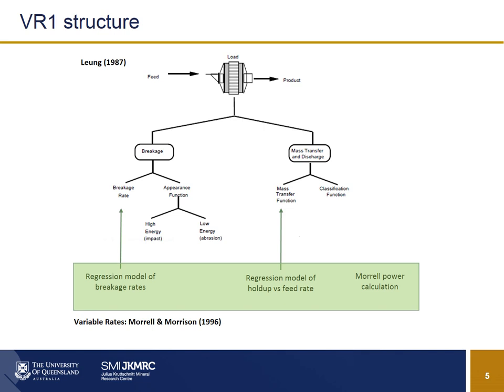The variable rates model overlays some regression models that feed predictive information to some of those functions — including on the mass transfer and on the breakage rate — so if you change the operating conditions of the mill, it will try to predict a new set of breakage rates and a new discharge rate. On the side it also calculates the Morell power equation, but that is not used in recalculating the breakage rates — it's just an output on the side.